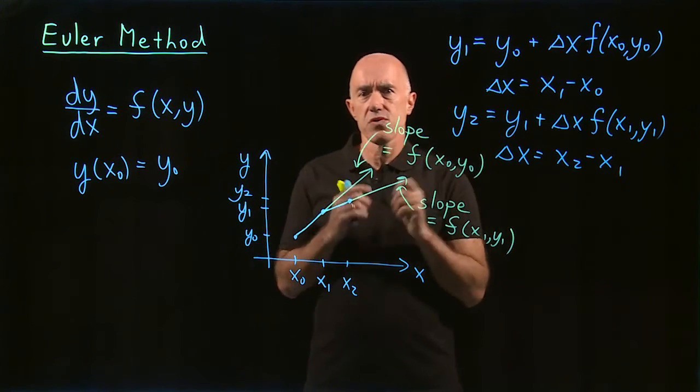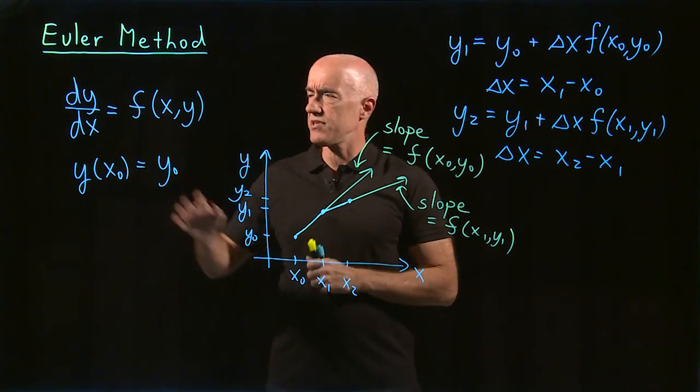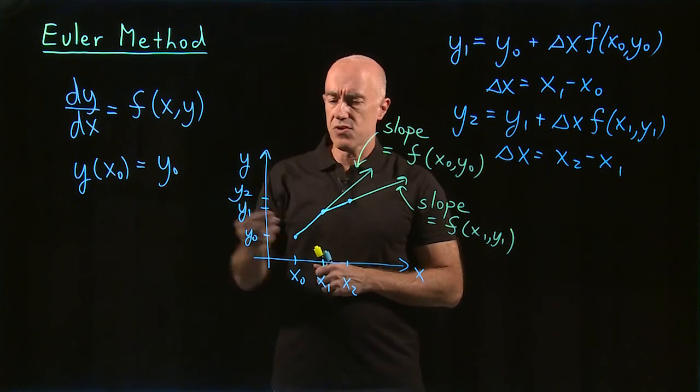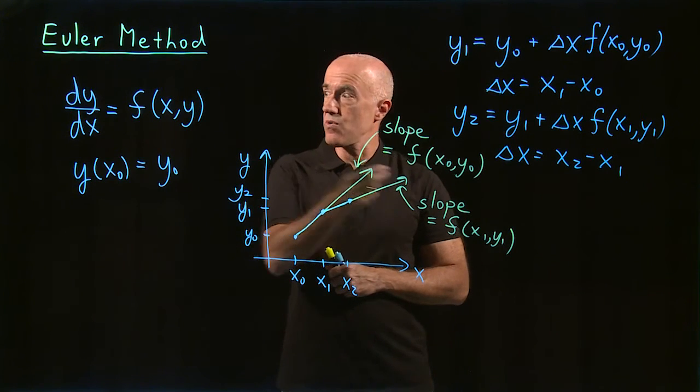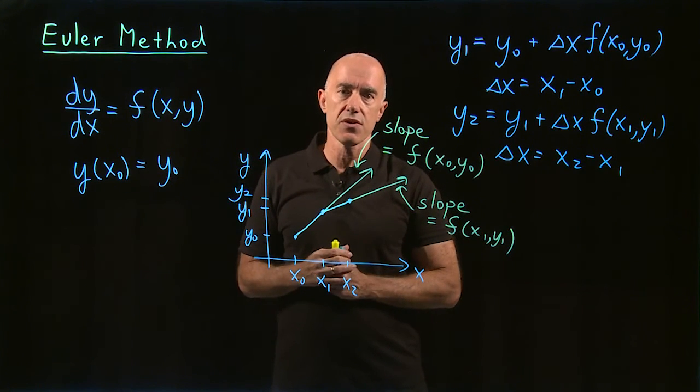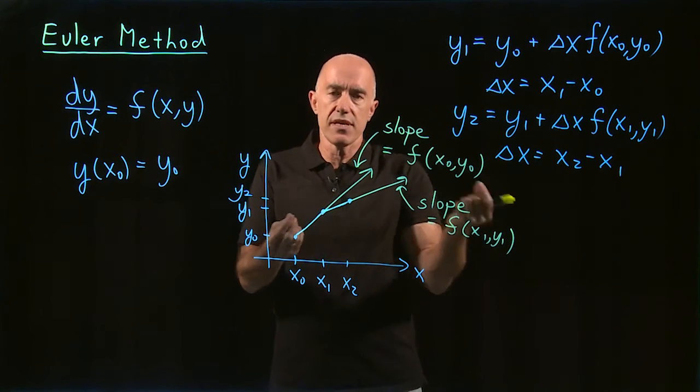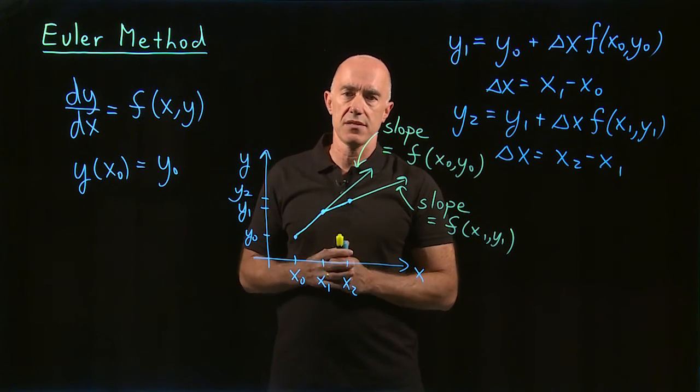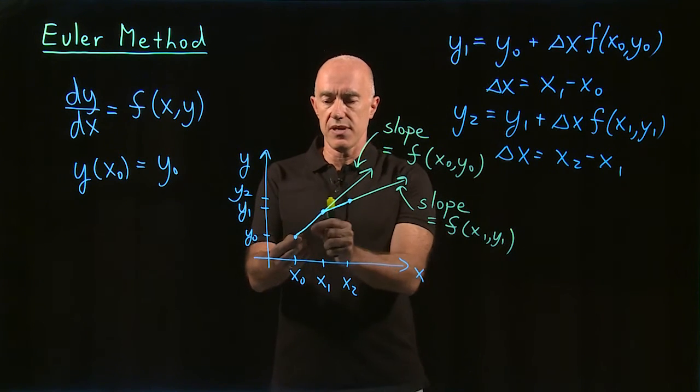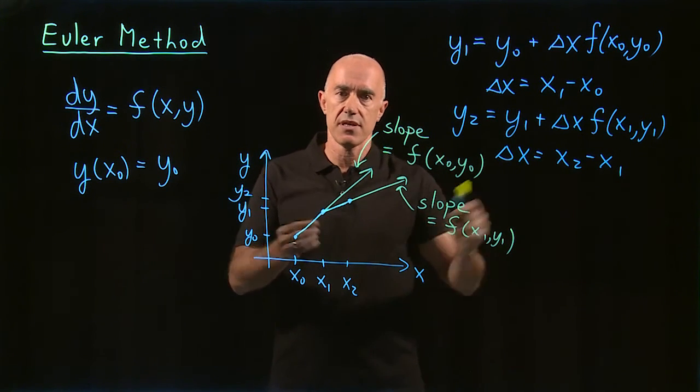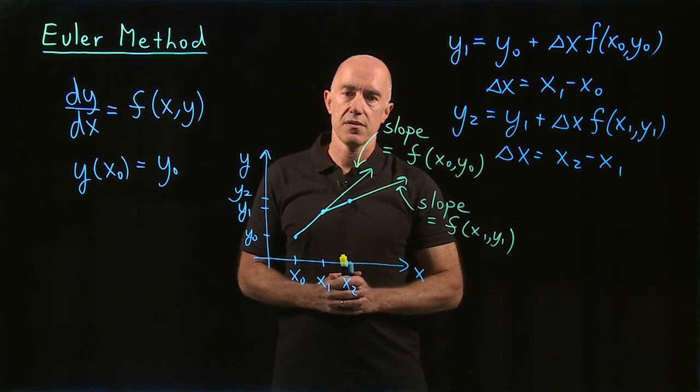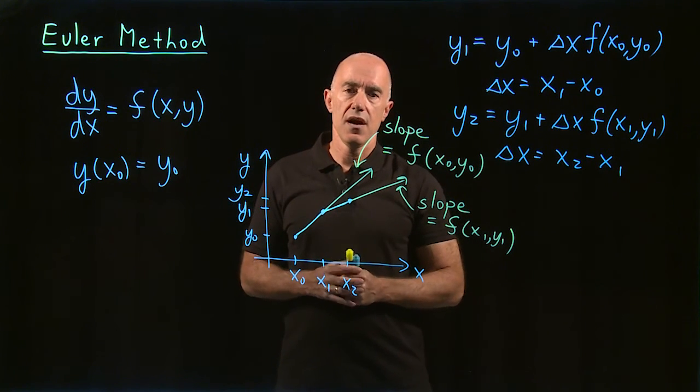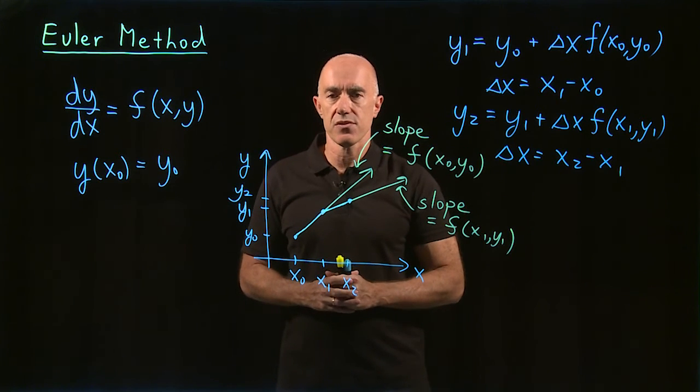So intuitively, what can you say about this differential equation? Given an initial value, then you can march the solution forward using the differential equation. And you'll have a unique solution. You'll have a solution that's called existence. And the solution will be unique. There will only be one solution as you march forward. So that's the existence and uniqueness of the solution of a differential equation.